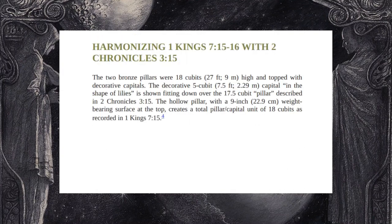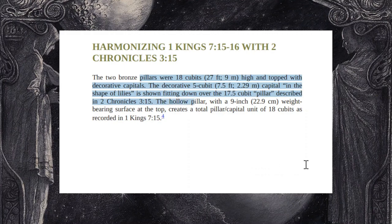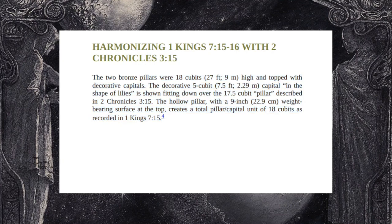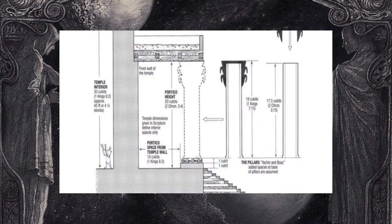So going back up to his harmonization: the two bronze pillars were 18 cubits high and topped with decorative capitals. The decorative five-cubit capital in the shape of lilies fits down over the 17.5-cubit pillar described in 2 Chronicles 3:15. The hollow pillar with a nine-inch weight-bearing surface at the top creates a total pillar-capital unit of 18 cubits as recorded in 1 Kings 7:15. So it is possible to harmonize the two accounts, especially taking into account the capitals.